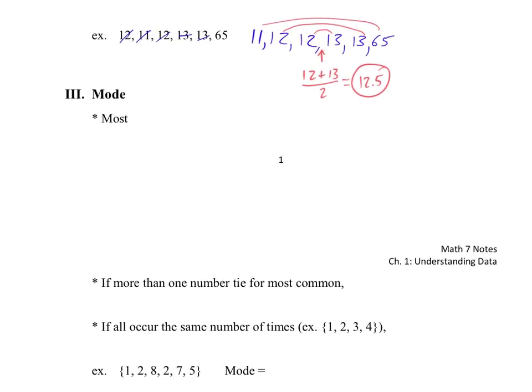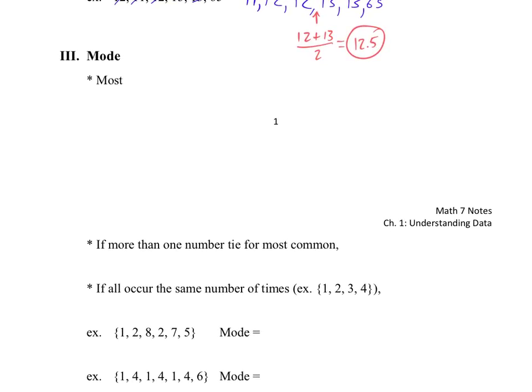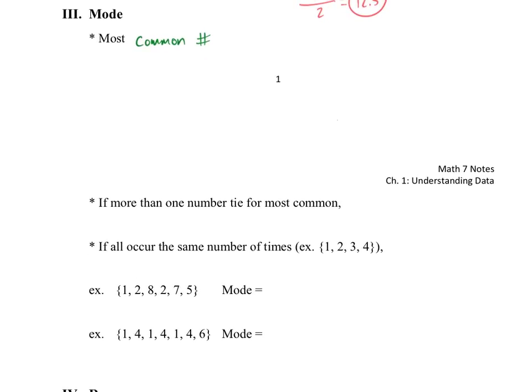Mode. Mode is the most, starts with a C. Common, perfect. So mode is the most common number. Or which number appears the most times? So for this first one, the mode there is going to be the number two. So if I look, I only have one one, I only have one eight, I only have one seven, one five, but I have two twos. So two occurs most often, so the mode would be two.